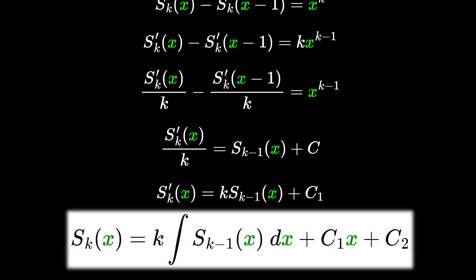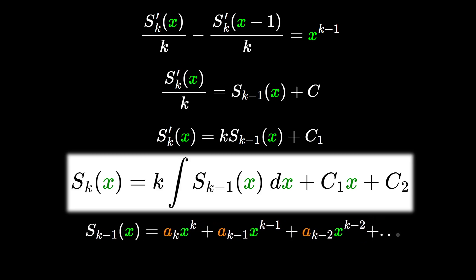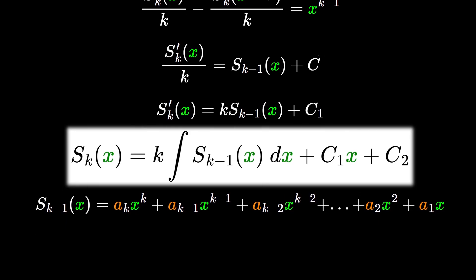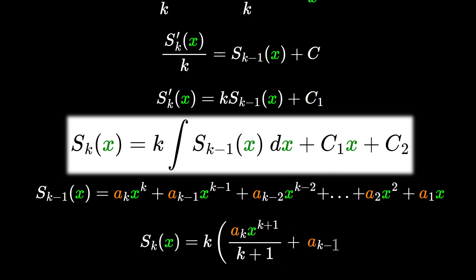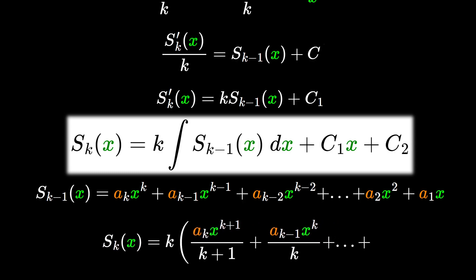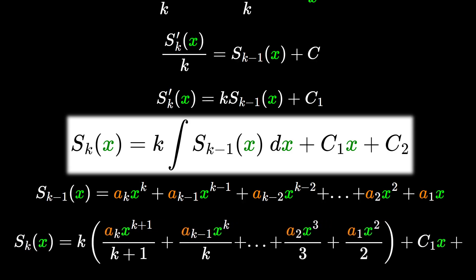This result is exactly what we verified at the beginning: we integrate a polynomial and multiply by k to get the formula for the sum of powers with the next integer exponent. Some coefficients are still unknown. Let's assume we have all coefficients from S_{k-1}(x) — call them a_k, a_{k-1}, and so on — each multiplying a power of x. To find S_k(x), we integrate using the inverse power rule, multiply by k, and keep unknown constants c_1 and c_2.